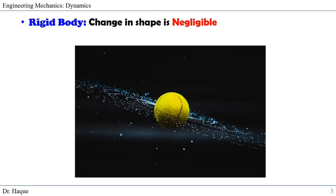For example, if we look at the tennis ball — when the ball is hit, it is translating and rotating at the same time. If we study the motion of the tennis ball, compared to that change in motion, the small deformation of the tennis ball is negligible. So we can neglect the change in shape of the tennis ball, thus simplifying the problem.